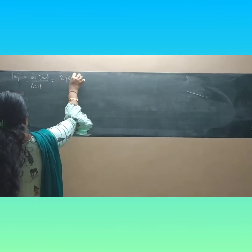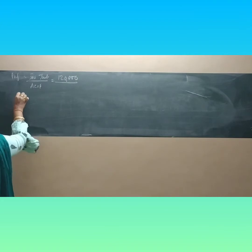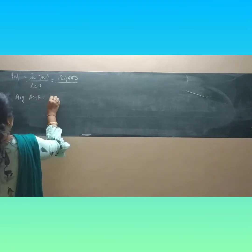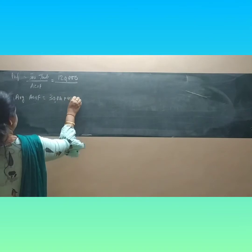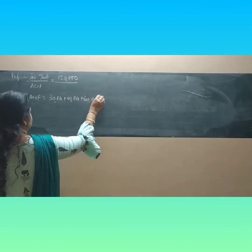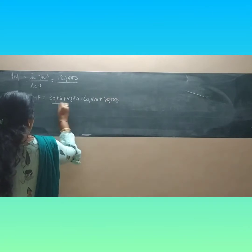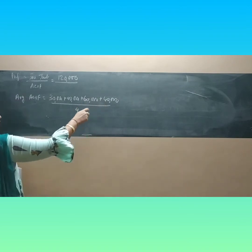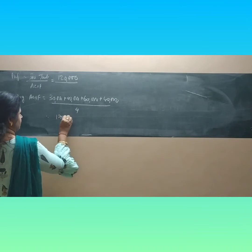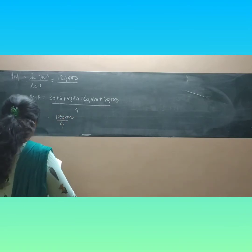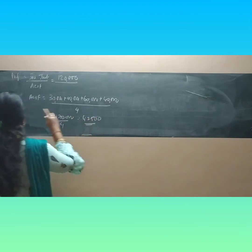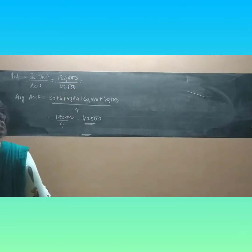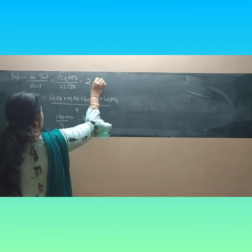The initial investment is ₹1,20,000. For the average annual cash inflow: 30,000 plus 40,000 plus 60,000 plus 40,000 — that is 170,000 — divided by 4, which equals ₹42,500. So ₹42,500 is the average annual cash inflow.